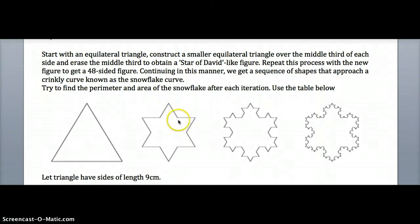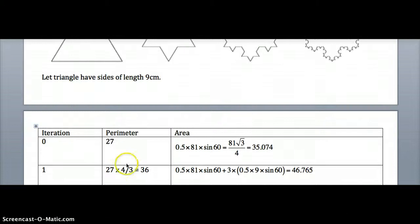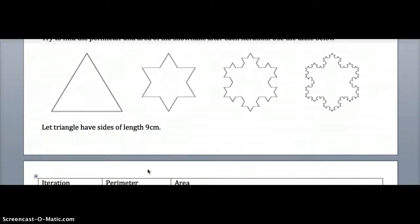Where you started with three, you've increased by a multiple of four over three on each of the three sides. So the overall length has been increased by four over three. So 27 by four over three is 36.